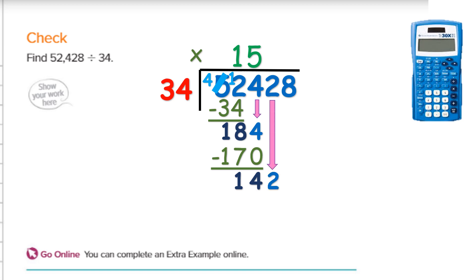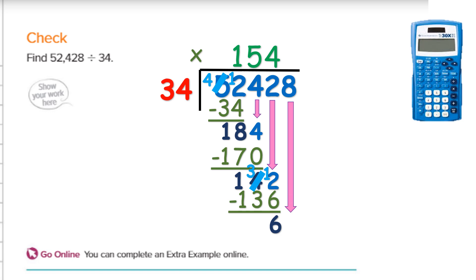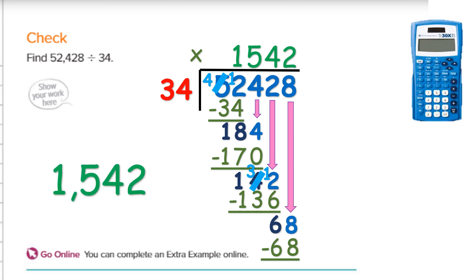Now I bring down my 2. I have 142 divided by 34. I type it into my calculator and I see 4 and stuff, because 4 times 34 is 136. I'm going to have to borrow because I can't hold 2 fingers and take 6 from it. From the 4, it becomes a 3. The 2 becomes 12. 12 minus 6 is 6. My last step: bring down my 8. Will 34 go into 68? Sure will — 2 times 34 is 68. Zero remainder. That gives me an answer of 1,542.